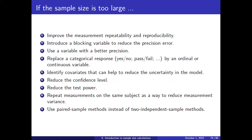If none of these options work, you should reduce either the confidence level or the test power. Another very effective way of reducing variance is repeating measurements on the same subject — measuring blood pressure multiple times — or using paired samples: measuring before and after treatment so that the person acts as their own control, removing differences due to age or lifestyle.